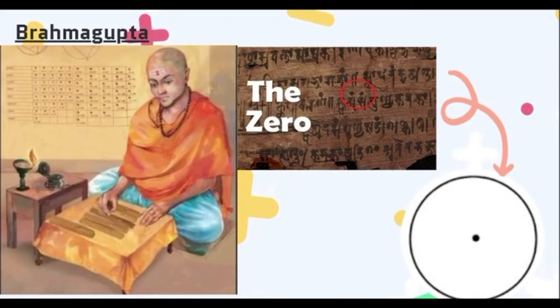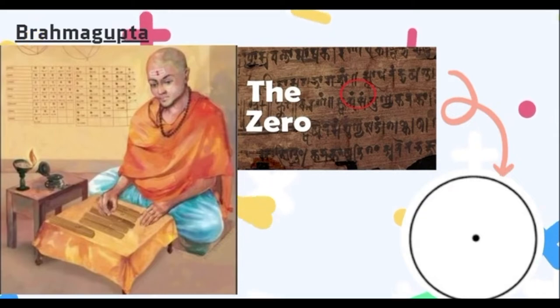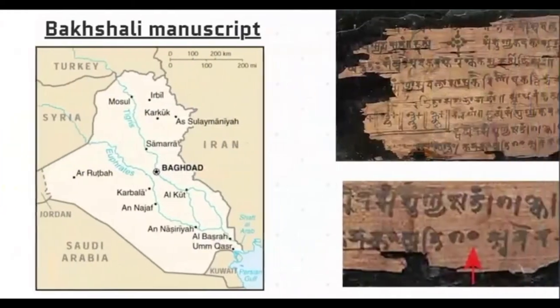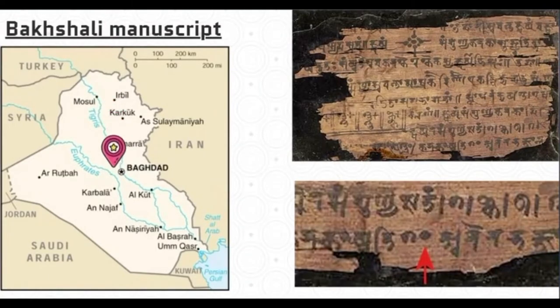But Brahmagupta could not get his head around division. He also did not introduce the second purpose of zero — that it can be used as a placeholder. That was left to another great Indian mathematician, Aryabhata, who introduced zero as a placeholder. The oldest manuscript in Indian mathematics is the Bakshali Manuscript, which features a small dot on a piece of birch bark, marking one of the biggest events in the history of mathematics, dating back to the 3rd or 4th century.